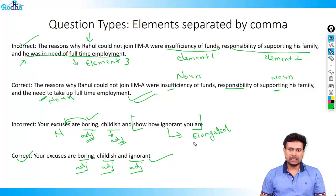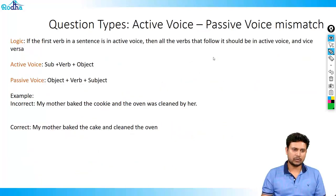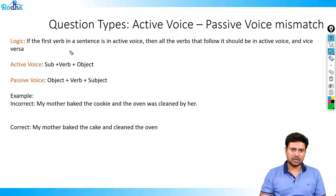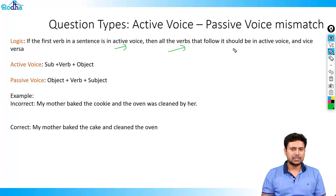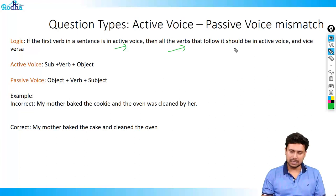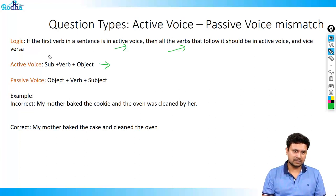Another important question type common in exams is the active voice/passive voice mismatch. The logic is: if the structure is in active voice, then all the verbs that follow should also be in active voice, and vice versa. You cannot insert a passive voice construction inside an active voice sentence. Active voice is a structure that starts with a subject and ends with an object.